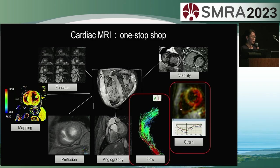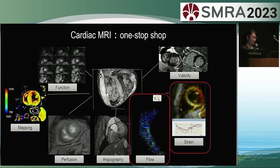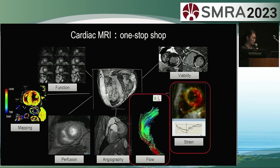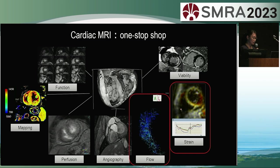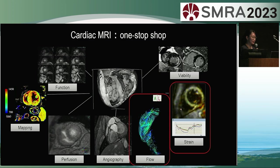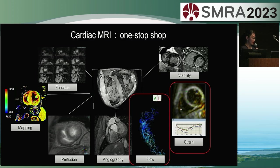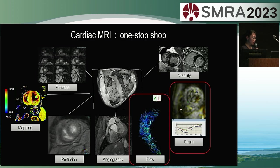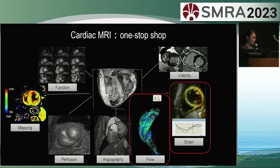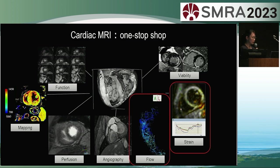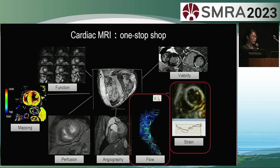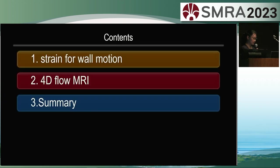One of the key features of cardiac MRI is its ability to assess both the morphology and function through a variety of imaging methods, including myocardial wall motion mapping, blood flow coronary artery morphology, and late gadolinium enhancement. Today, I will be introducing strain and 4D flow MRI.